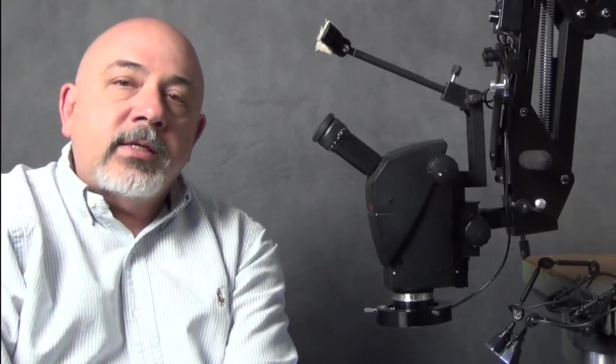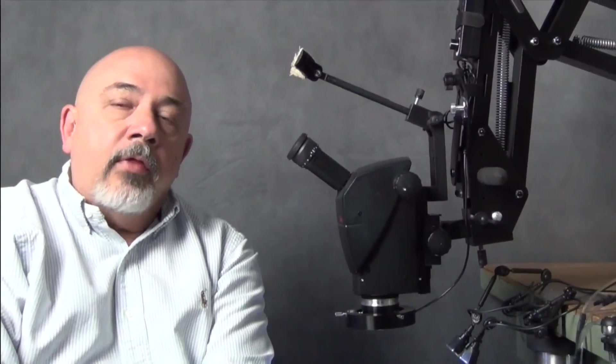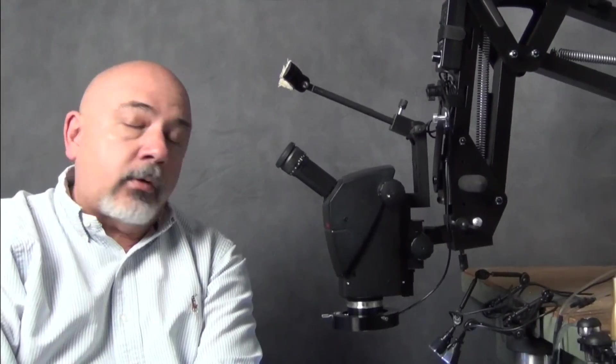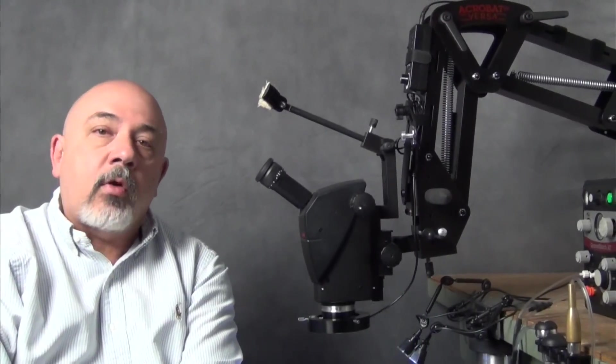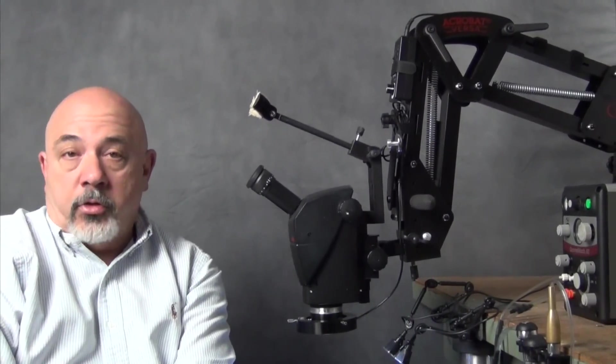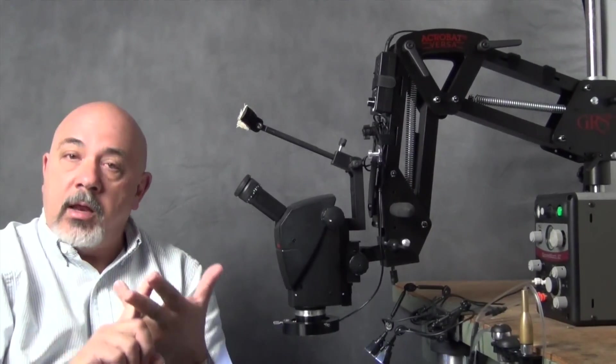The Leica A60 is a perfect example of Leica's innovative thinking. And there are three key features to this microscope that you should consider when selecting a stereo microscope for hand engraving or stone setting. Those three features are brightness, sharpness, and depth of field.